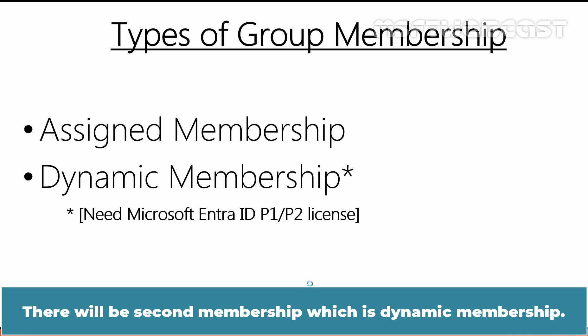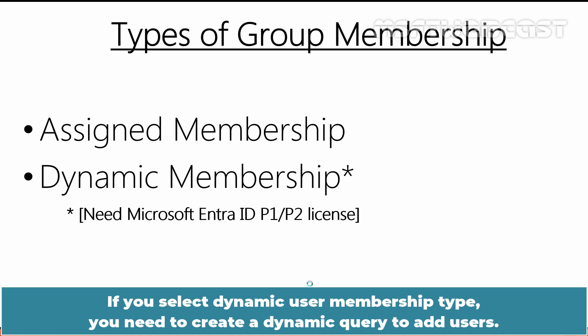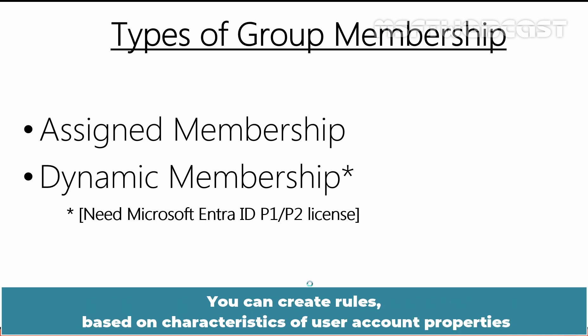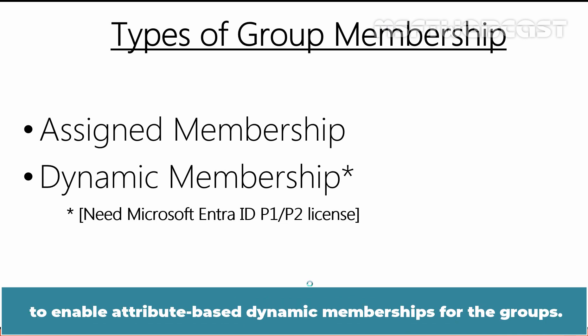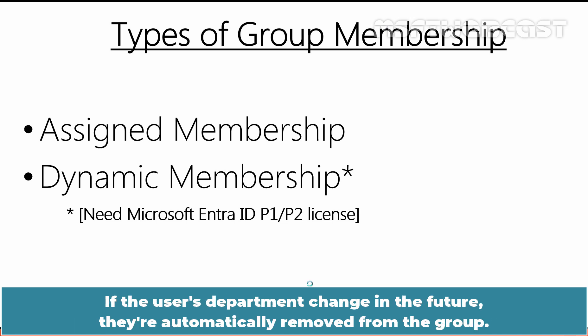The second group membership type is Dynamic Membership. Keep in mind that Dynamic Group Membership Type is not available with Microsoft Entra ID free subscription. If you select Dynamic User Membership Type, you need to create a dynamic query to add users. Dynamic query gives you flexibility to add members with the help of conditions. You can create rules based on user account properties to enable attribute-based dynamic membership. For example, if a user's department is Sales, that user will be dynamically assigned to the Sales group, and if their department changes in the future, they are automatically removed from the group.